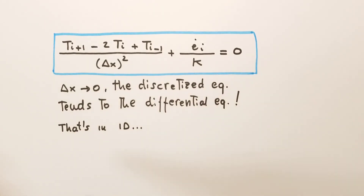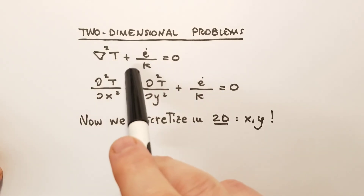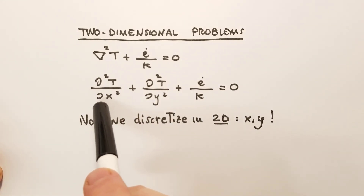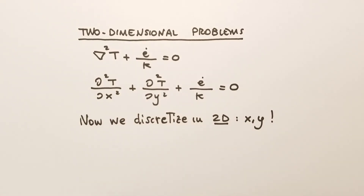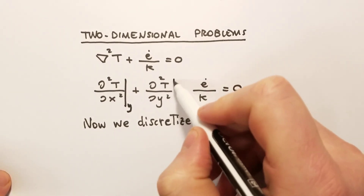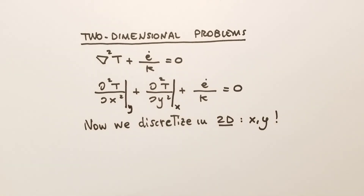This was in one dimension, where the temperature depends only on x. For a two-dimensional problem by finite difference, the approach is exactly the same. In 3D we have the Laplacian of the temperature plus the heat generation term equals zero. In 2D, the Laplacian is the sum of the second partial derivatives: partial squared T / partial x squared (at fixed y) plus partial squared T / partial y squared (at fixed x). We can then discretize this in two dimensions.